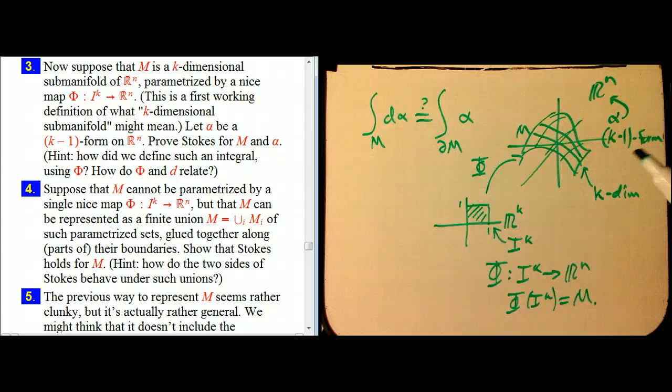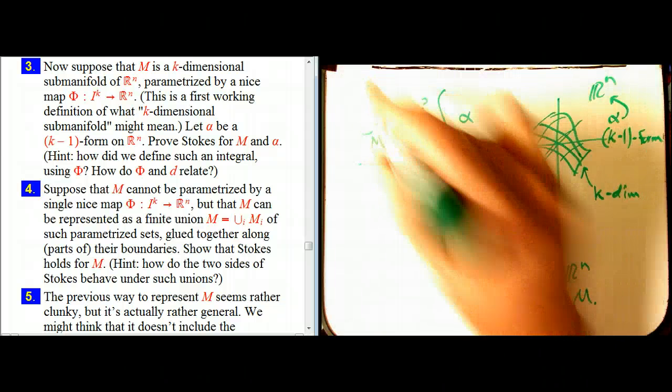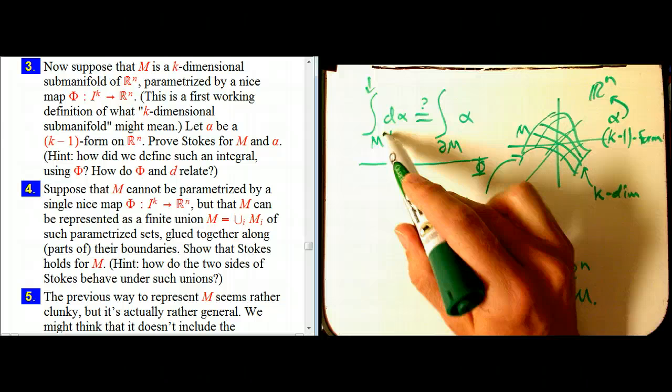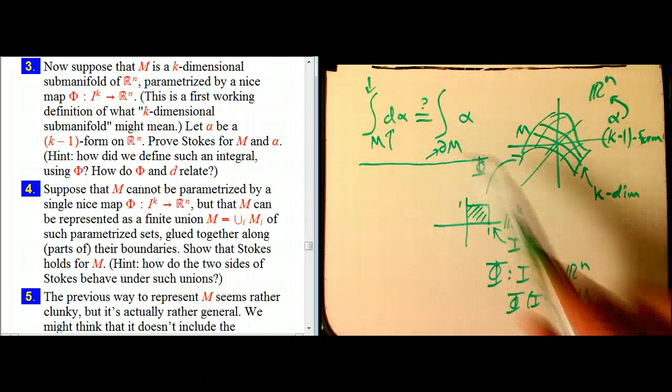But this really gets us to almost the full level of generality for Stokes' theorem. So we want to know if this is true. And there's three pieces to Stokes' theorem. There's the integral, there's the d, the exterior derivative, and there's the boundary. Well, let's deal with the boundary first.